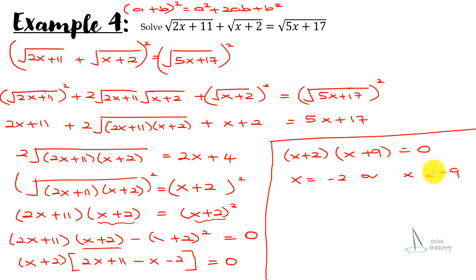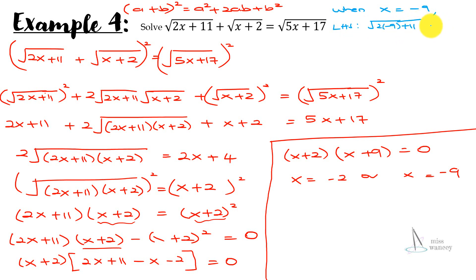We have two answers so we must check both. When x = −9: the left-hand side gives √(2(−9)+11) = √(−7), which is an imaginary number. We cannot accept a negative number under a square root, so x = −9 is automatically rejected.